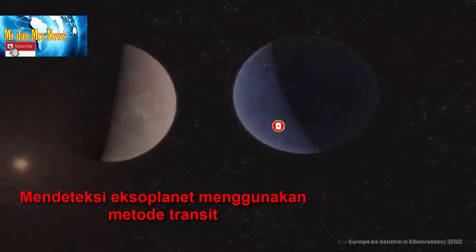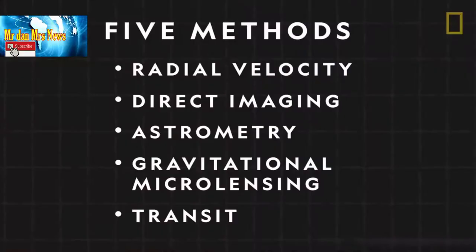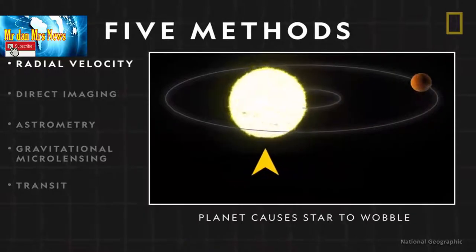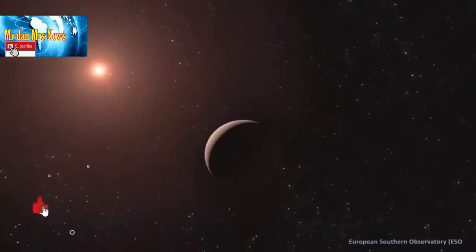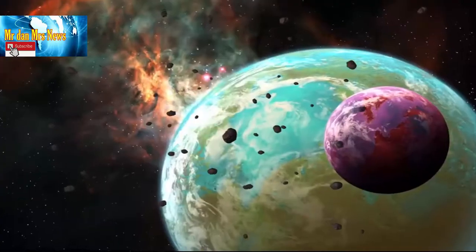Pengamatan itu digabungkan dengan metode lain yang disebut kecepatan radial. Cara ini memungkinkan para ahli untuk menentukan bahwa planet yang paling dekat dengan bintang L98-59 memiliki setengah massa Venus, menjadikannya eksoplanet teringan yang pernah terdeteksi.